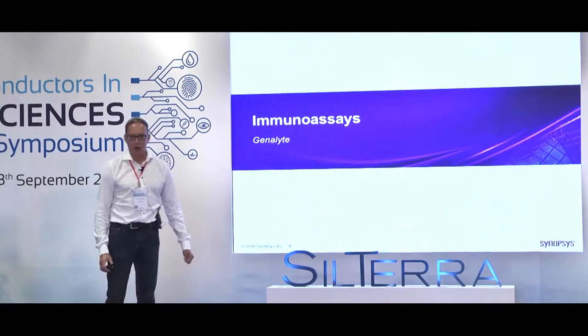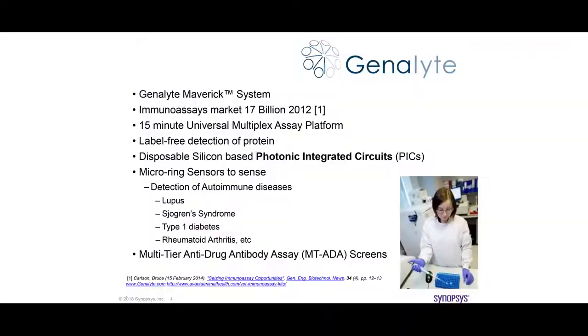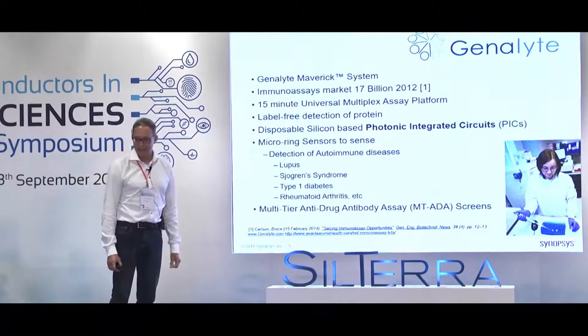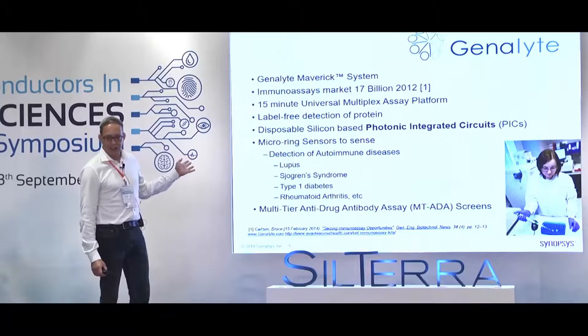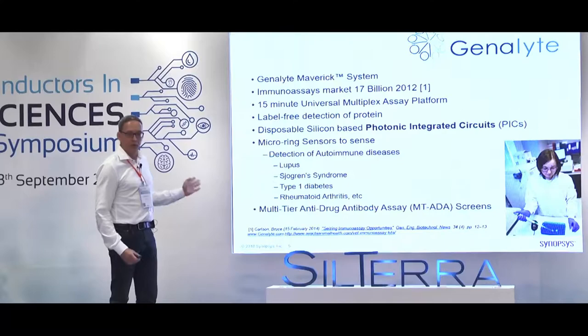I first want to address the application area of immunoassays, and there I found this really interesting company, Genalight. Genalight is making test equipment for immunoassays and it's an interesting market — a lot of money goes around in it, in the billions. What I find really interesting is that they are using disposable photonic integrated circuits for the tests.